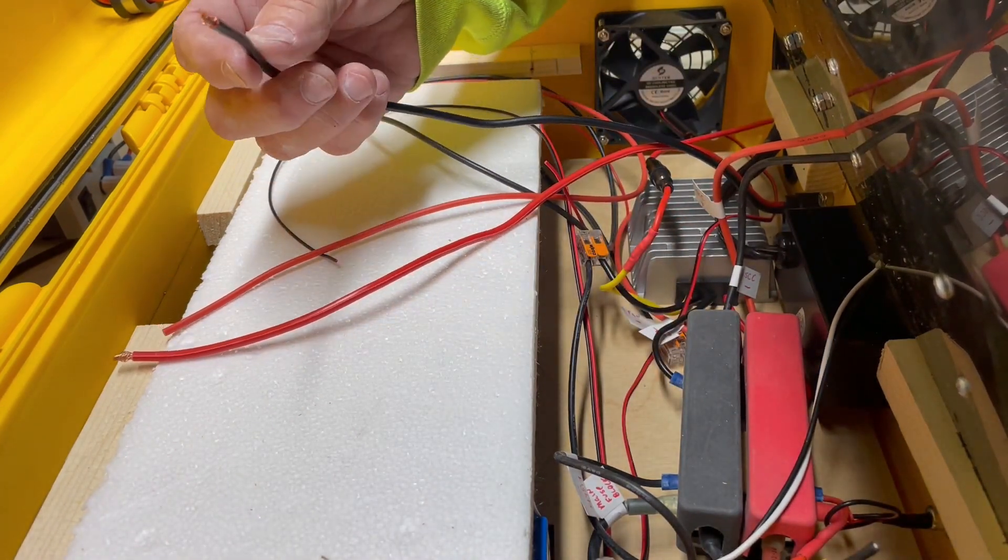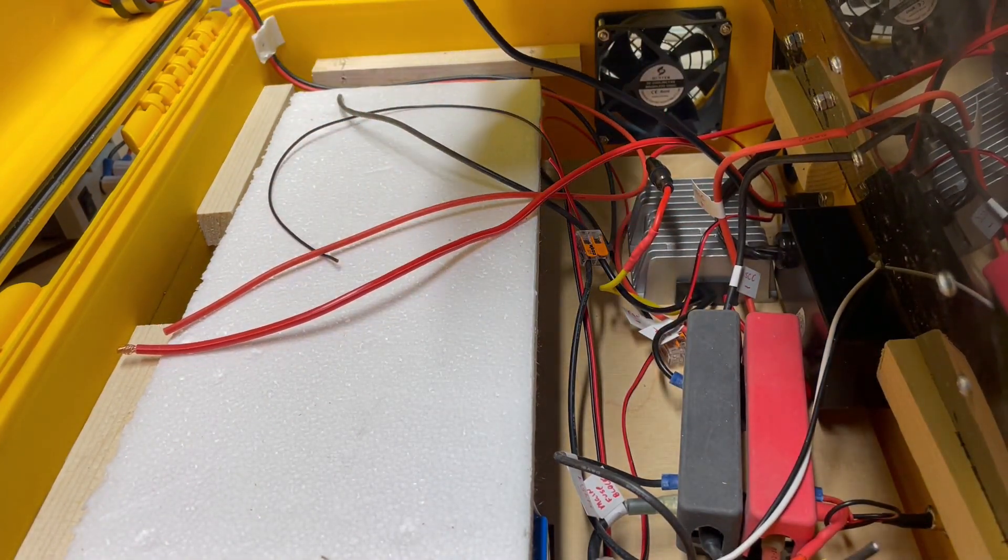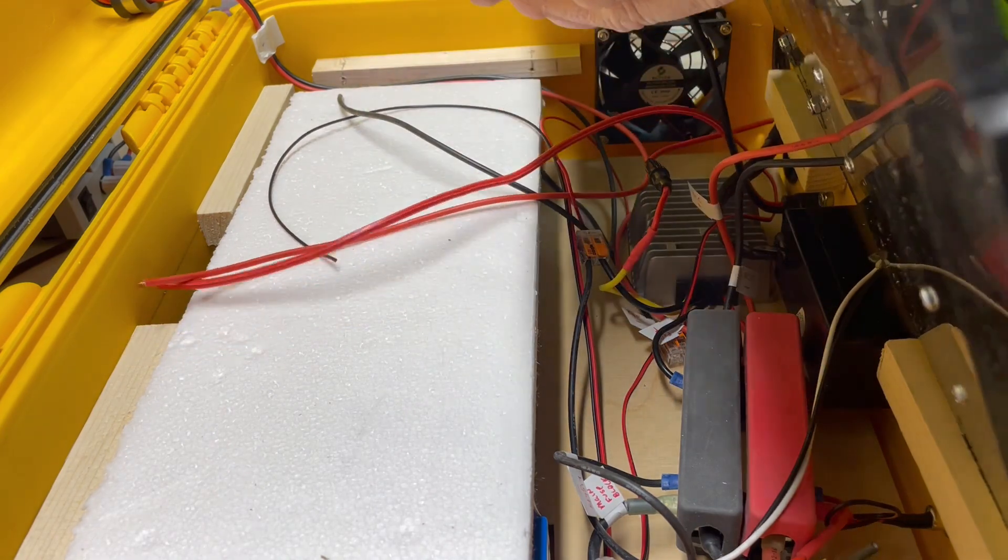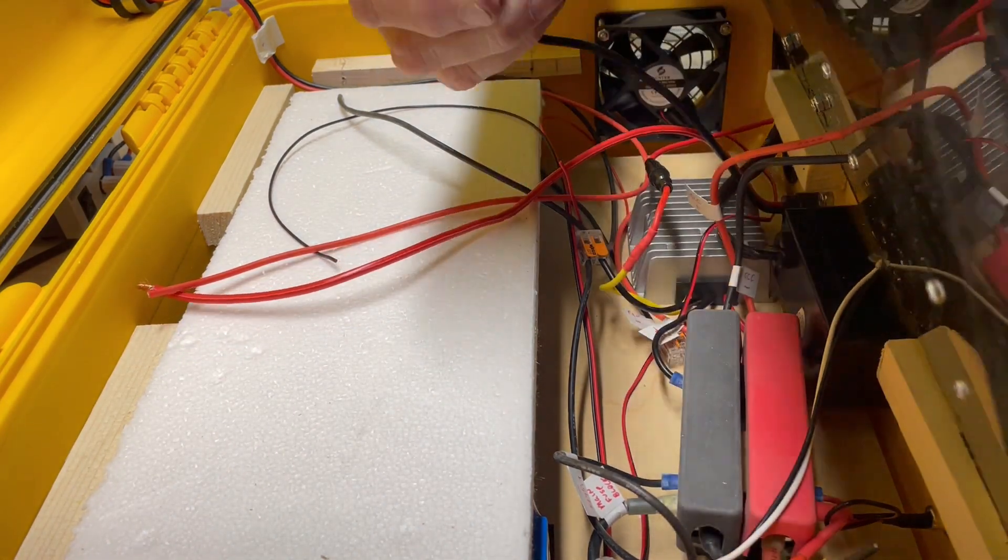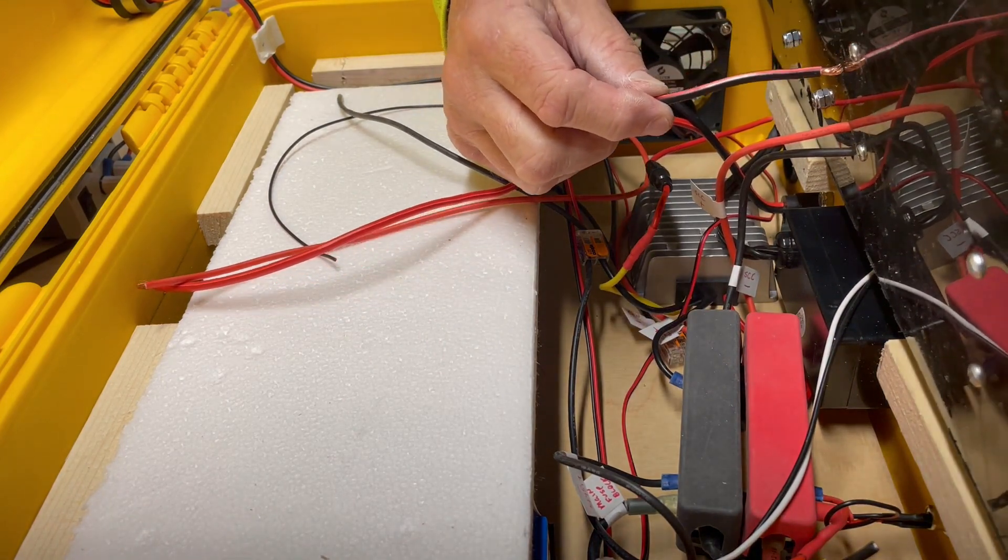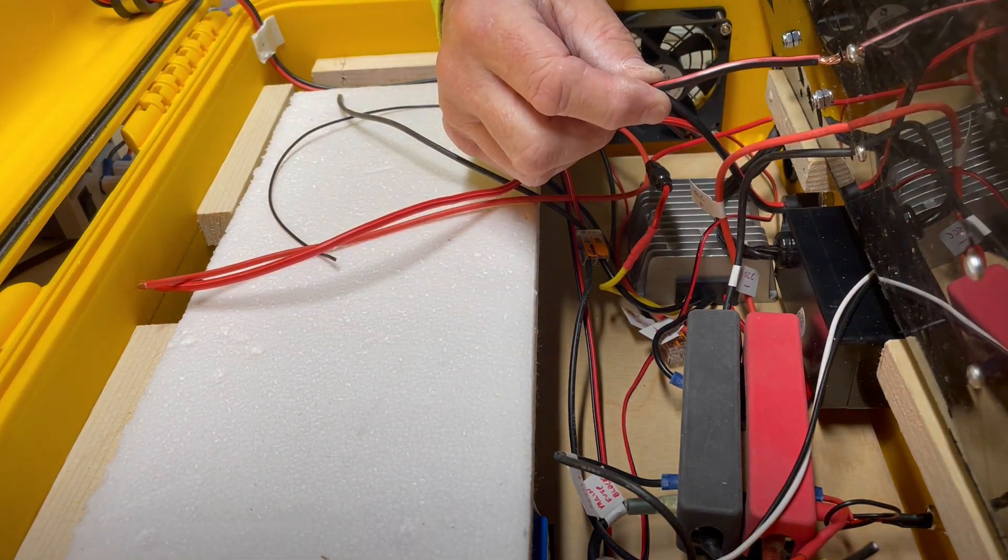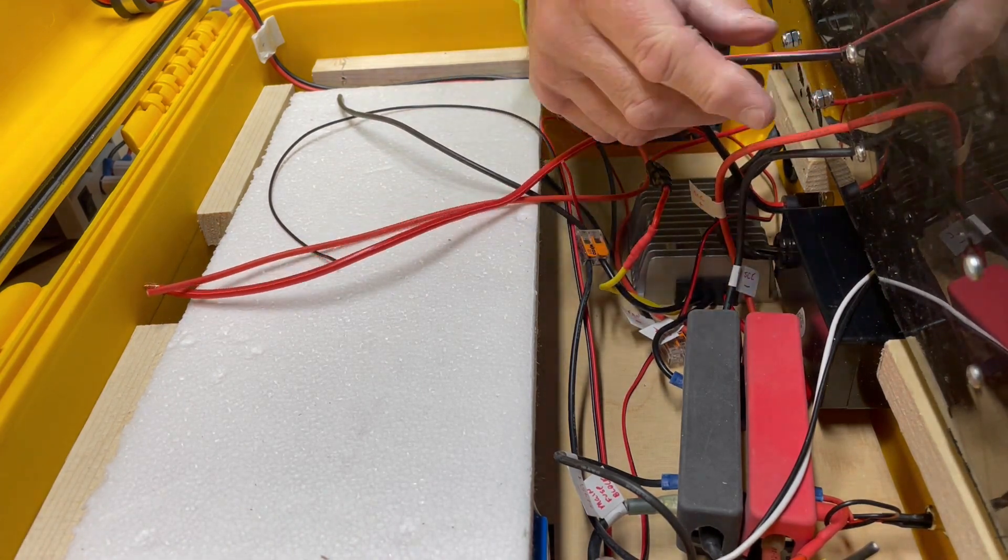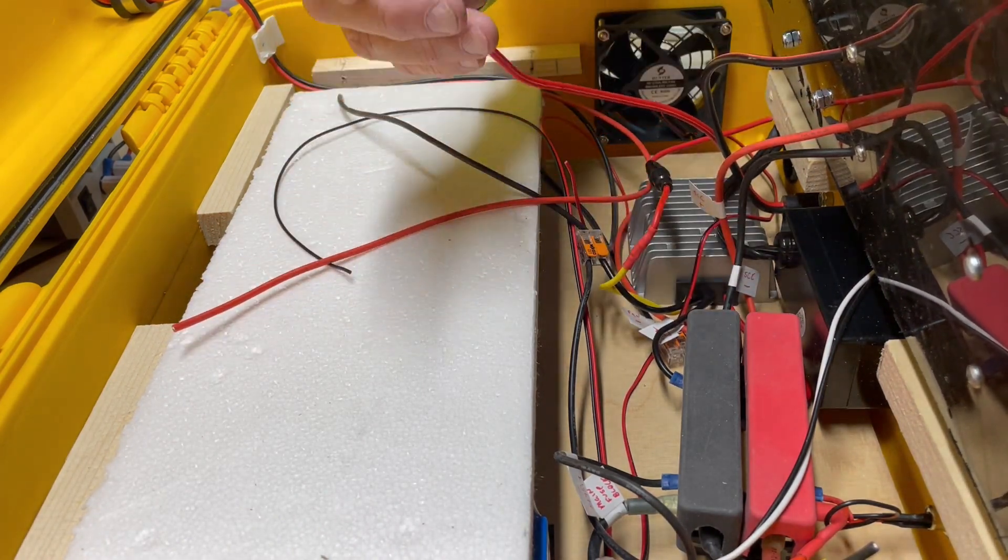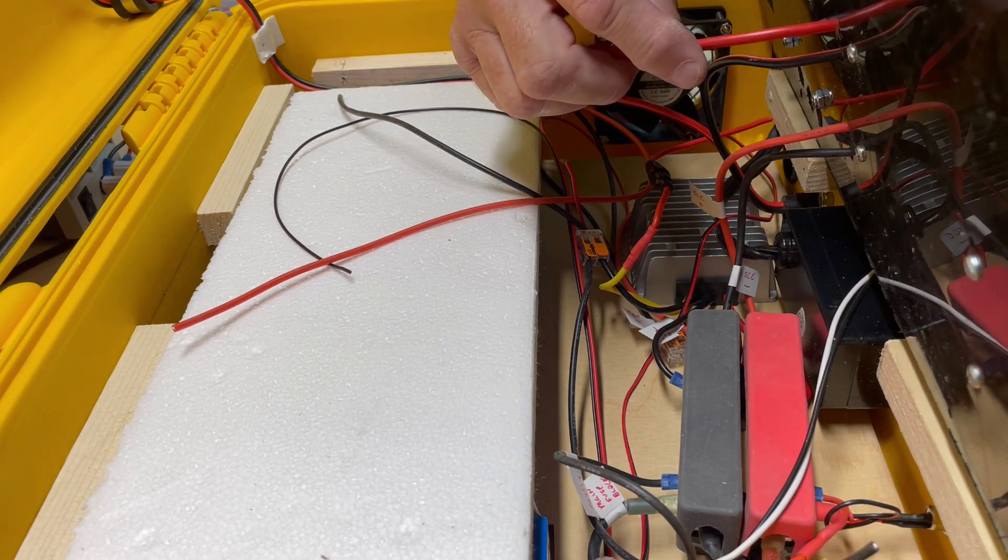Then this is for the solar charger, the solar panels. And up here it's positive and negative. The negative is the lower one, so the lower one goes here, and the positive one goes there.